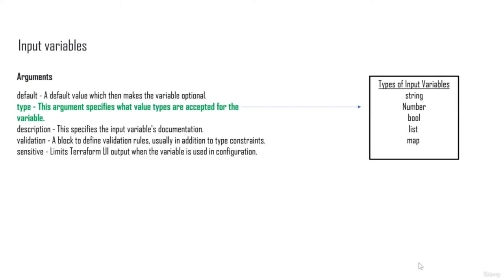The variable block has the following arguments: 'default' (optional, sets values), 'type' (defines the type — string, number, boolean, list, or map), 'description' (optional), 'validation' (for validating values), and 'sensitive' (if you don't want to display output for that variable). Inputs can be defined in either main.tf or variables.tf. There's a distinction between defining variables and assigning values — you can define in main.tf or variables.tf, then assign values separately.